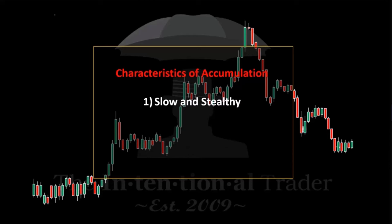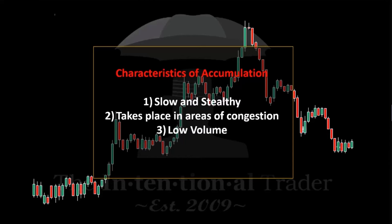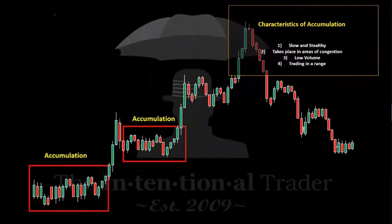Accumulation is slow and stealthy. The big boys — the market makers — come in and buy up all available assets. If they do it in a hurry, everybody knows what's going on. So it typically takes place in areas of congestion, where price is just chopping around sideways at relatively low volume. While we're sitting there bored watching price trade in a range, that's what accumulation looks like on a typical chart.